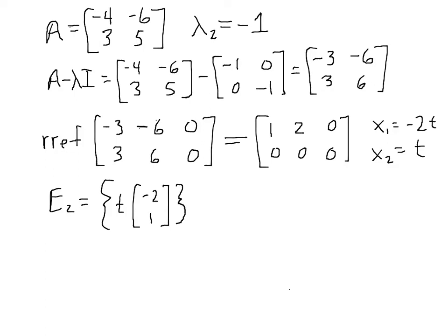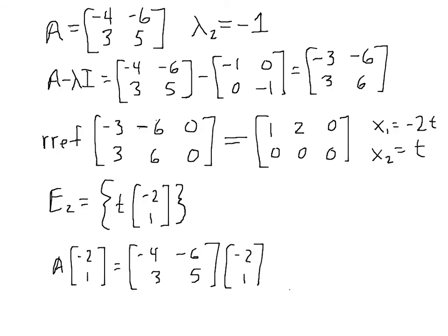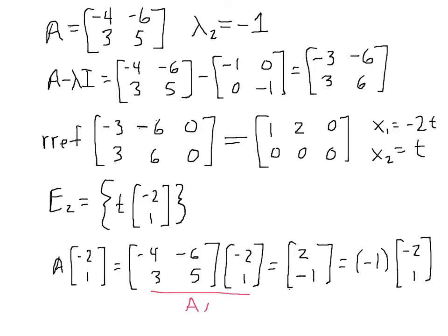Let's test that. If it's correct, then negative 2, 1 itself should be an eigenvector. Taking A times negative 2, 1: negative 4, negative 6, 3, 5 times negative 2, 1 gives us 2, negative 1. We can see this equals negative 1 times the vector negative 2, 1. So AX equals lambda X holds for lambda equal to negative 1 and eigenvector negative 2, 1.